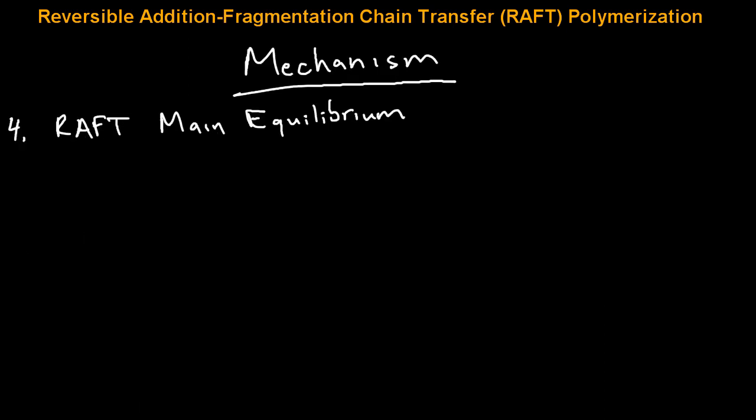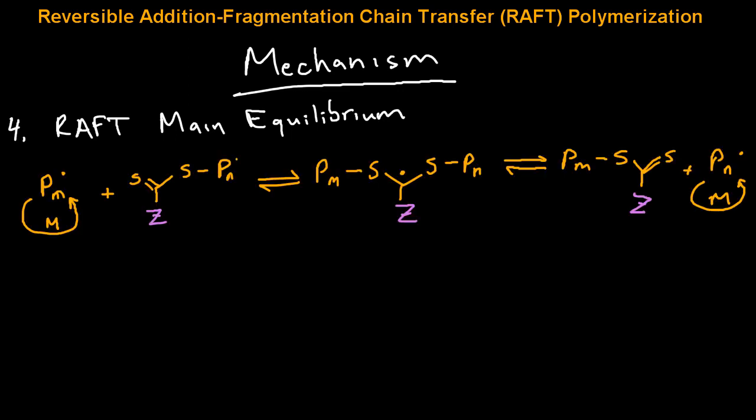The most major step of a RAFT polymerization is the RAFT main equilibrium step. Those initial first three steps take place rather quickly, whereas this is the main and the most important mechanism within the reaction. Growing polymer chains reversibly attach and detach from the chain transfer agent or RAFT agent.